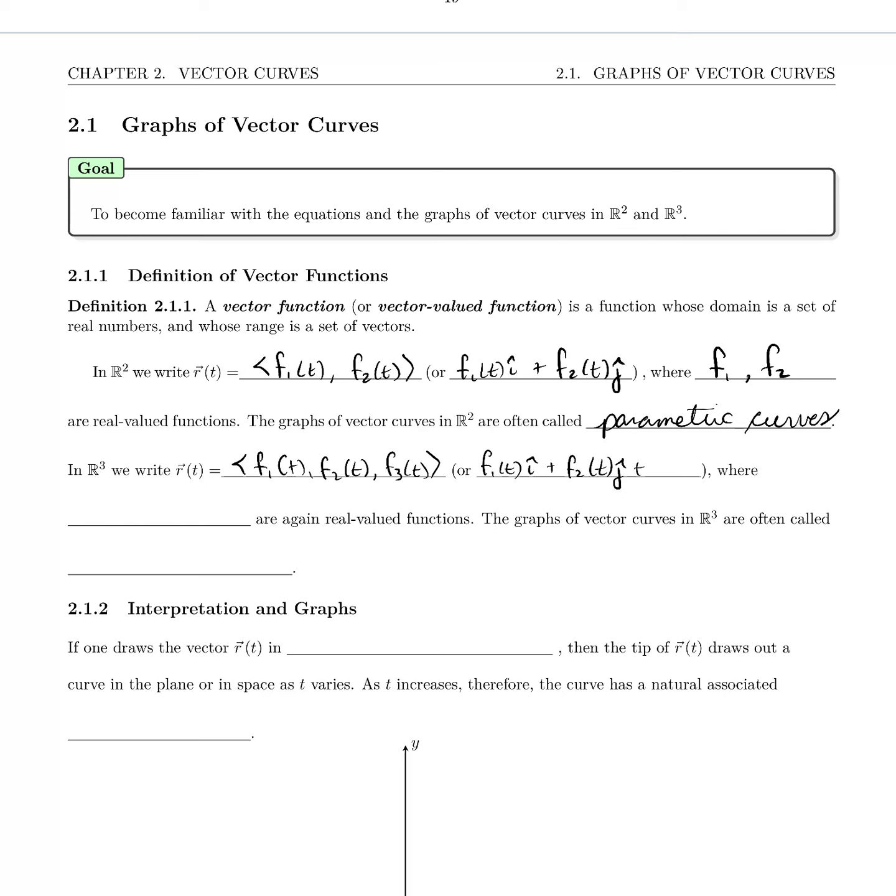f₁(t) times i hat, f₂(t) times j hat, plus f₃(t) times k hat, where again f₁, f₂, and f₃ are real-valued functions. The graphs of vector curves in R³ are often called space curves.